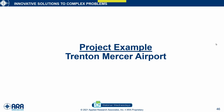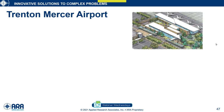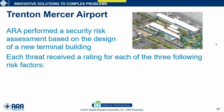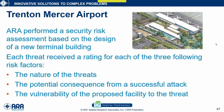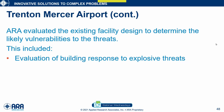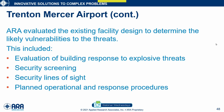A more recent effort was Trenton Mercer Airport in Trenton, New Jersey, where we used the newer risk-based approach for a new terminal building being planned to replace the existing facility. Each threat received ratings for three risk factors: the nature of the threat, potential consequence from a successful attack, and vulnerability of the proposed facility to the threat. Those three factors — threat, vulnerability, and consequence — comprise the risk assessment for security risk. We also evaluated the existing facility to determine likely vulnerabilities, including evaluation of building response to explosive threats, security screening, security lines of sight, and planned operational and response procedures.